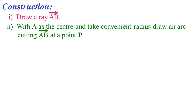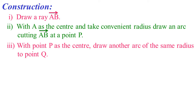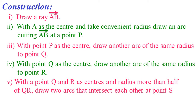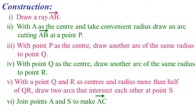Now let's write the construction following the above steps. Step 1: Draw a ray AB. Step 2: With A as the center and take a convenient radius, draw an arc cutting ray AB at a point P. Step 3: With point P as the center, draw another arc of the same radius to point Q. Step 4: With point Q as the center, draw another arc of the same radius to point R. Step 5: With points Q and R as the centers and radius more than half of QR, draw two arcs that intersect each other at a point S. Step 6: Join points A and S to make a ray AC.